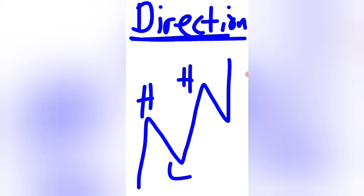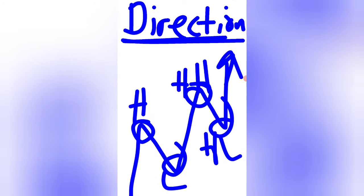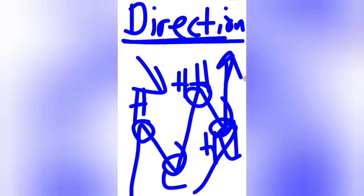One way of knowing the direction of the market is when you have the market forming higher highs and higher lows. This is a clear sign that the market is going up. If your strategy can show you that the market is forming this pattern and gives you the same direction, then you know your strategy is guaranteed to give you the correct direction.